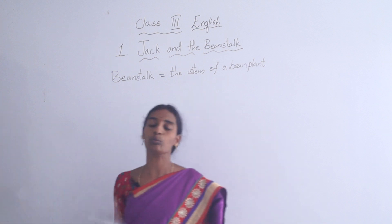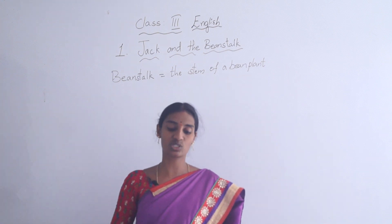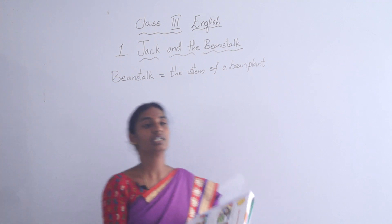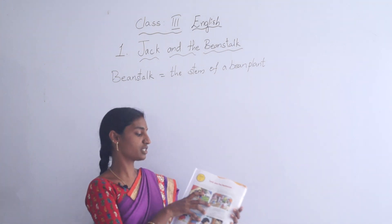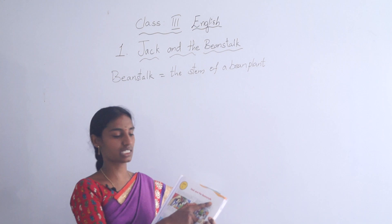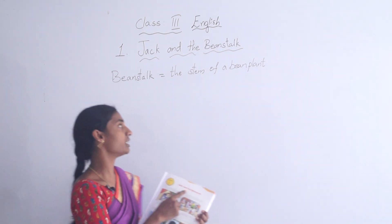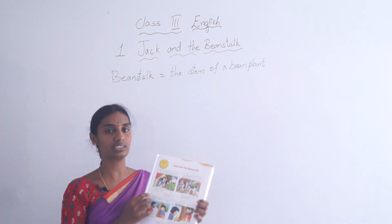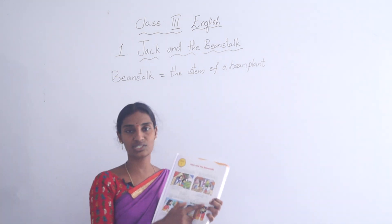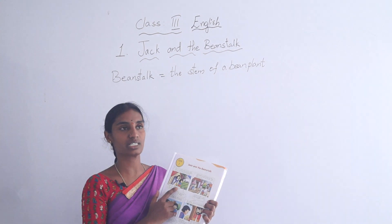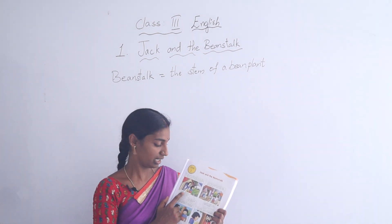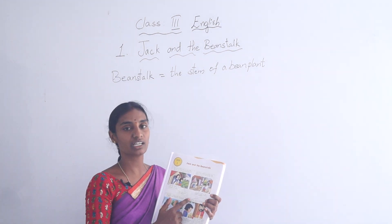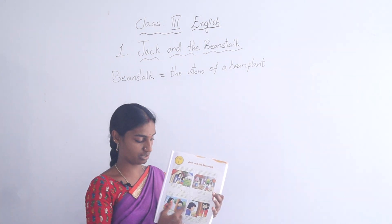Children, open your English semester one textbook. Open page number five. Here you can see the first unit — Jack and the bean stalk. I already told you what bean stalk means: it is the stem of a plant. Here you can see good picturization. In this you can see the characters — a mother, Jack's mother is there, and Jack.